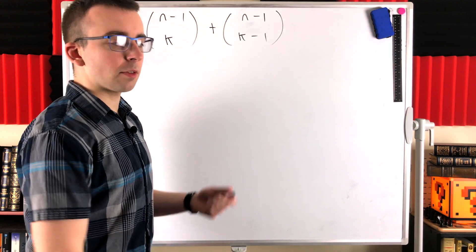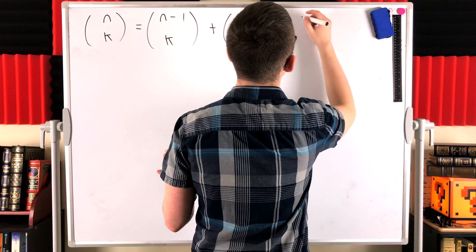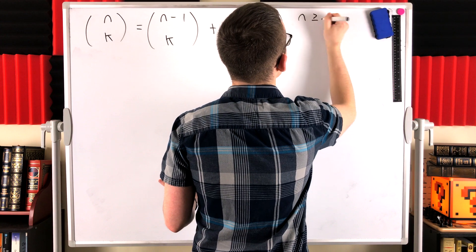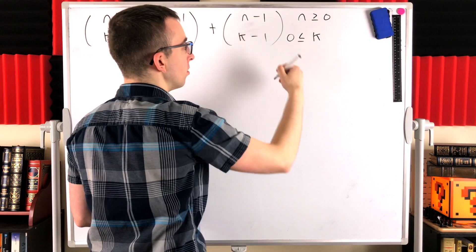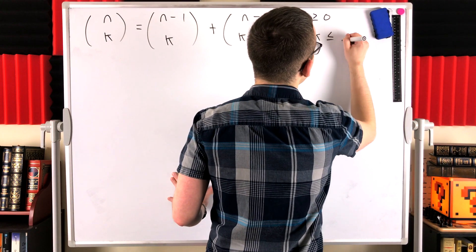Now we might want to specify our typical restrictions on n and k, so we might say that n has to be greater than or equal to 0 and k can range from 0 to n inclusive.